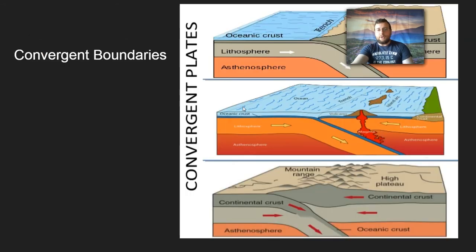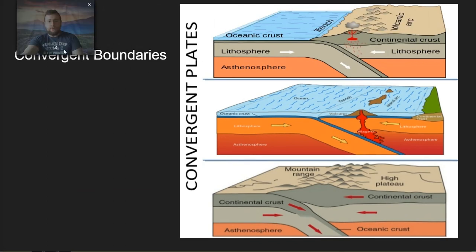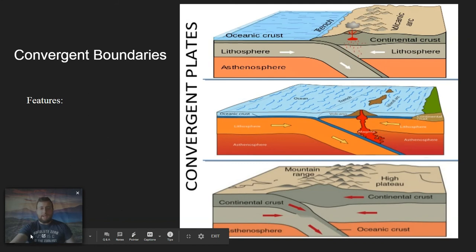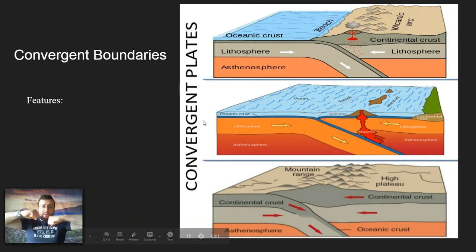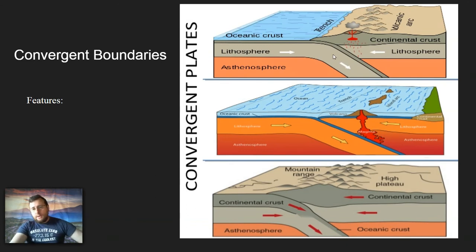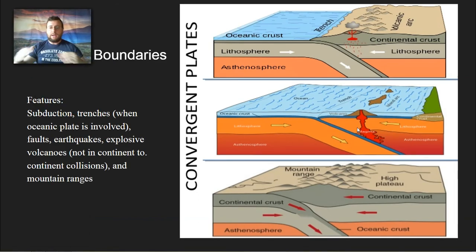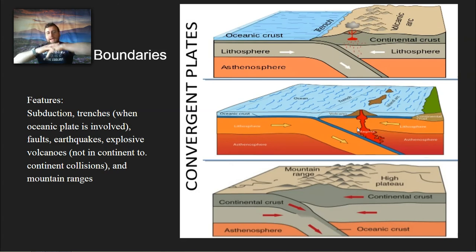The next type of boundary is convergent boundaries, which form wherever two plates collide against each other. As they collide, one plate is forced to go above the other, and the one that sinks undergoes subduction — it goes underneath the other plate and melts. As it melts, the magma pushes through the other plate, causing a chain of volcanic mountains.